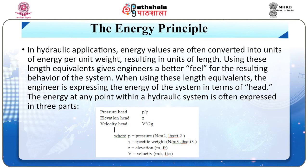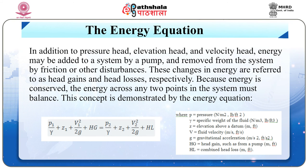Energy at any point within a hydraulic system is expressed in three parts: pressure head (P/γ), elevation head (Z), and velocity head (V²/2g), where P is pressure, γ is specific weight, Z is elevation, and V is velocity. Energy may be added by a pump and removed by friction or other disturbances — referred to as head gains and head losses. Because energy is conserved, the energy across two points must be balanced, as demonstrated by the energy equation.